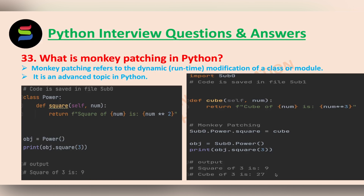Now we have another piece of code in a separate file. Here, we have changed the behavior of the square function at runtime. We have replaced the defined function square with a newly defined function cube at runtime itself. First, we imported the previously created file — the previous file name was sub0 and this file name is sub1. We imported the previously created sub0.py file.